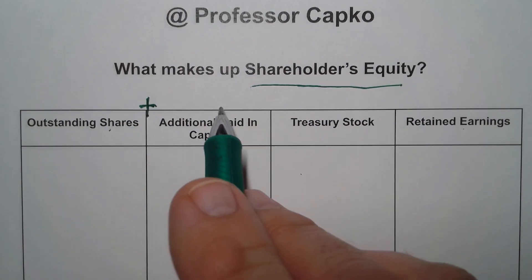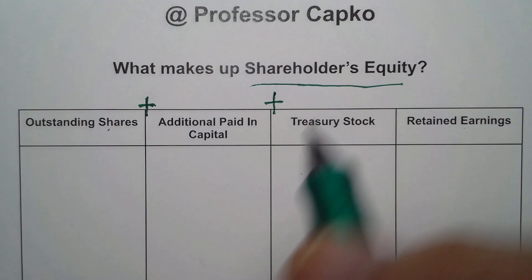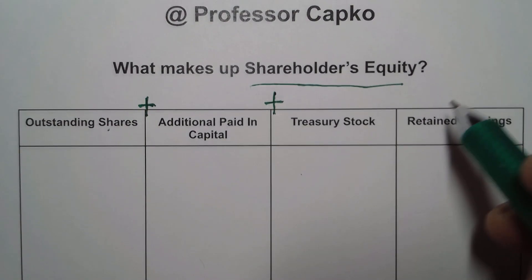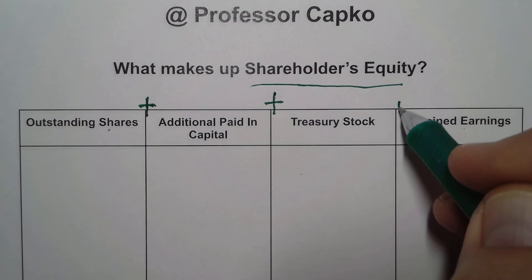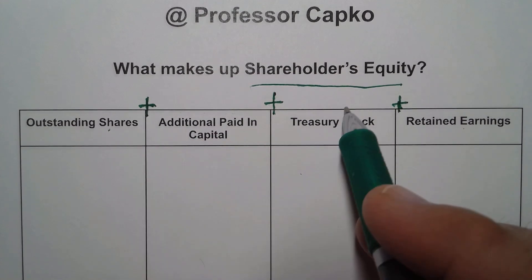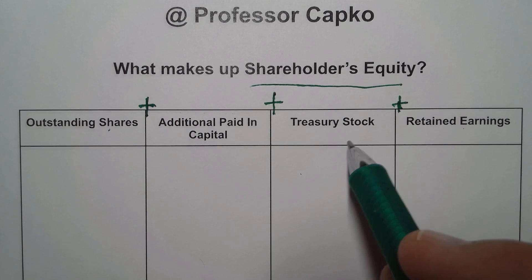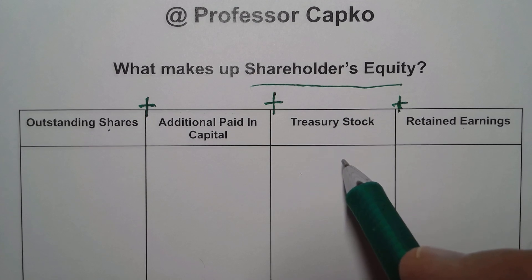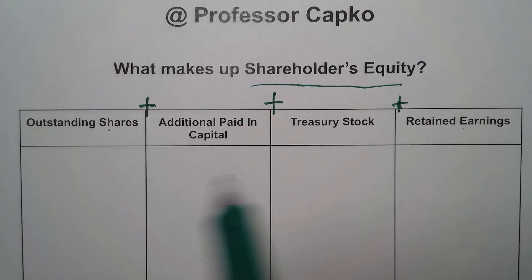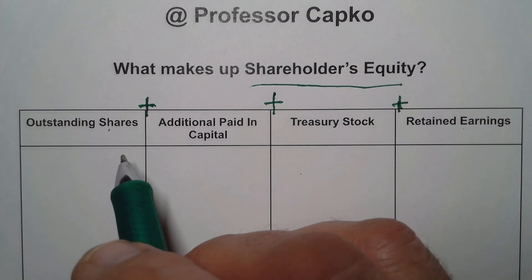The outstanding shares plus the additional paid-in capital, plus the treasury stock, plus the retained earnings all add up together to make up shareholders equity. It's possible that maybe one or more of these has a zero balance, but regardless, we want to at least consider all four of those.